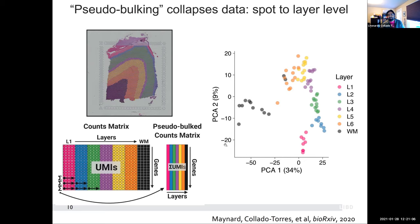In order to use it for downstream analysis, we compress the data using pseudobulking — when you sum up the expression levels. The genes are on the rows and we have the different spots on the columns. We summed up the expression levels for a given gene across all the spots from a given image for a given layer. The layers were manually assigned — all the spots were manually assigned to a given layer using different pieces of information.